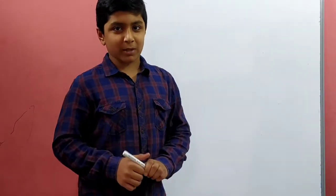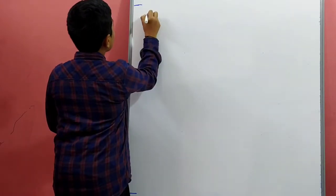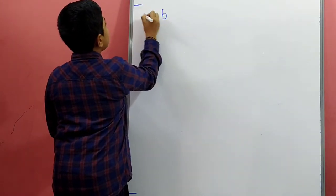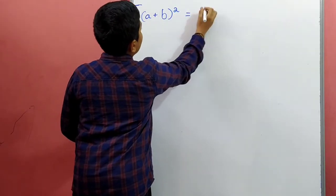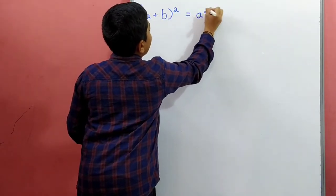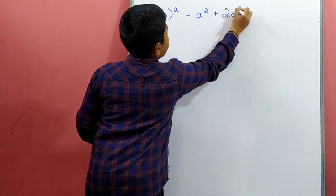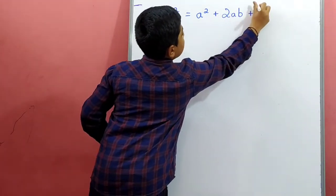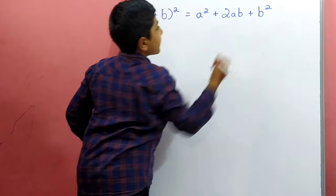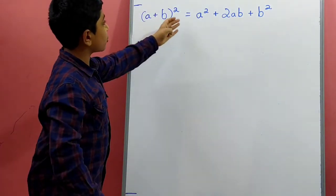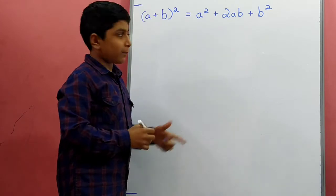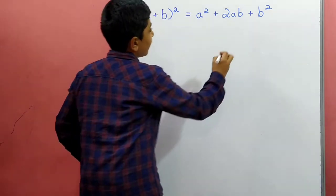Hi friends, we all know that a plus b the whole square is equal to a square plus 2ab plus b square. But why is a plus b the whole square equal to a square plus 2ab plus b square?